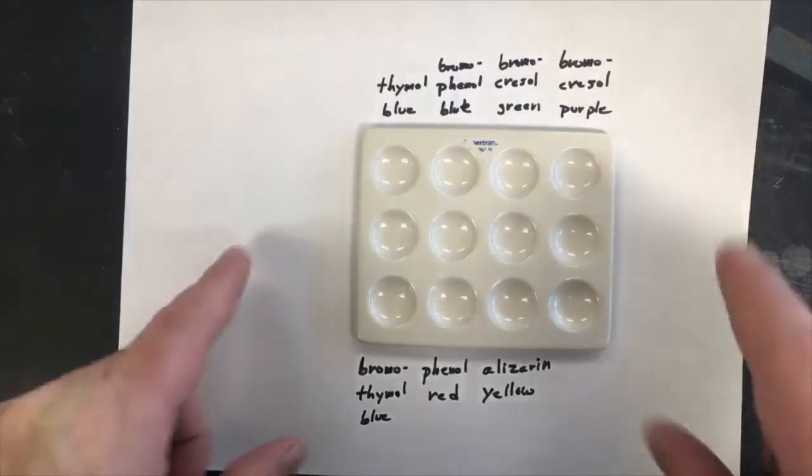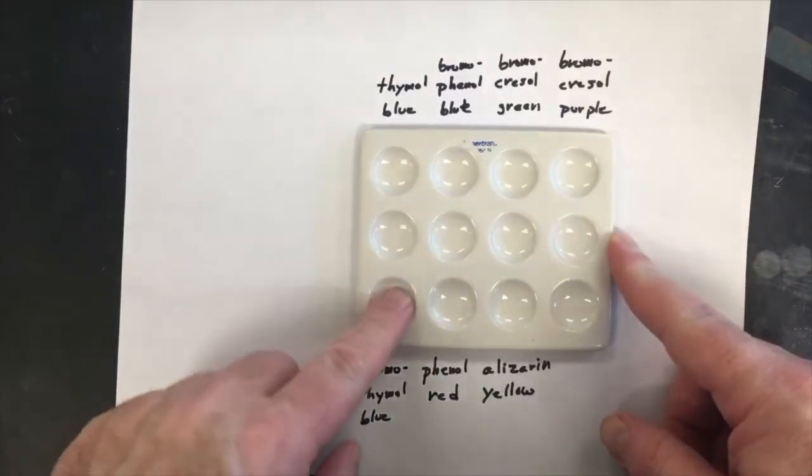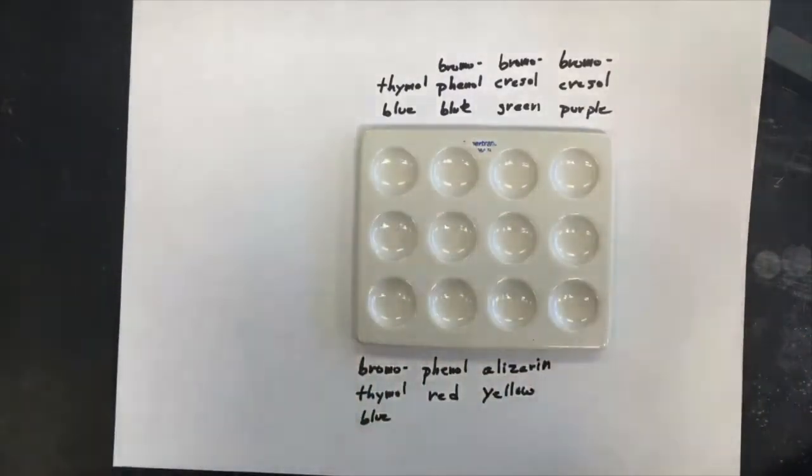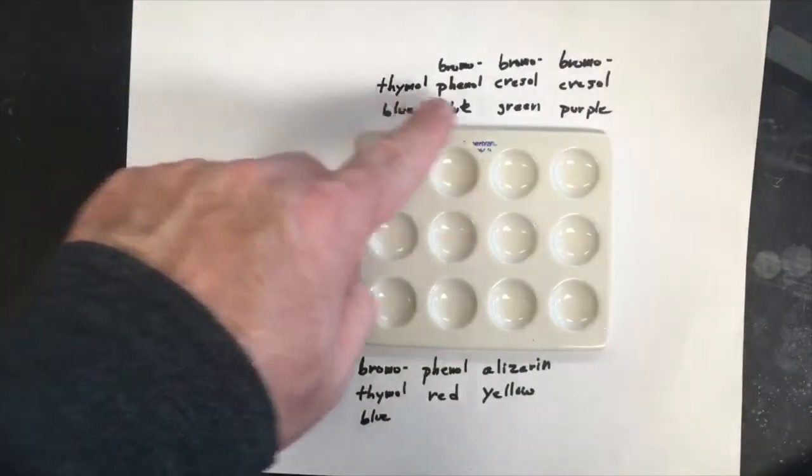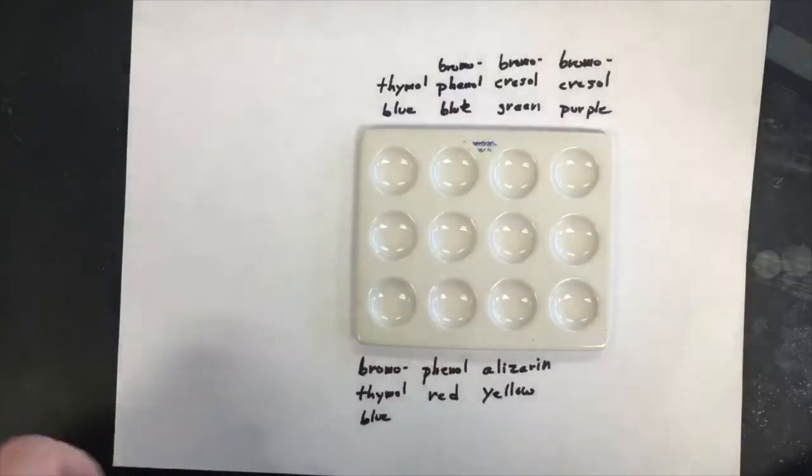So below us I have, this is called a spot plate and it has these indentations that I'm going to be mixing the indicator with the solution in it and I kind of labeled it along sort of next to the spots which indicator is going to go in. So I'm going to go through and do each of the solutions being tested one by one with all the indicators.